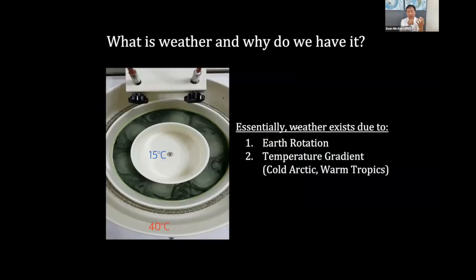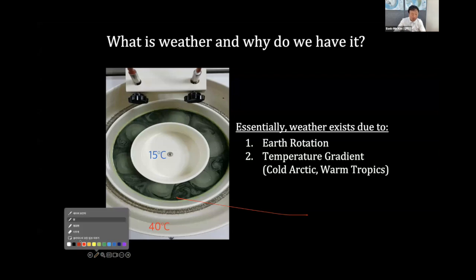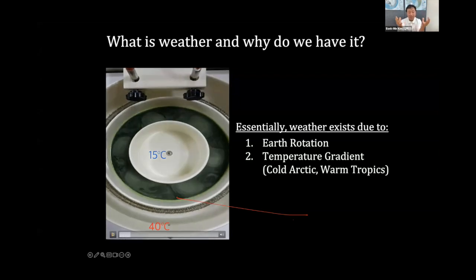That's because essentially weather exists due to Earth rotation and temperature gradient. If we don't have Arctic, very cold Arctic and warm tropics, we don't have weather. We atmospheric scientists proved it. To give some idea to you clearly, I show you some laboratory experiment research. Suppose this is a kind of dish pan experiment.